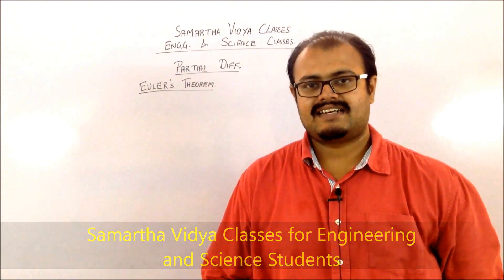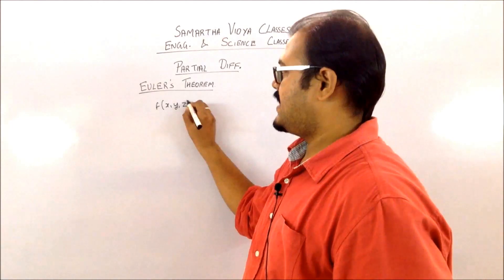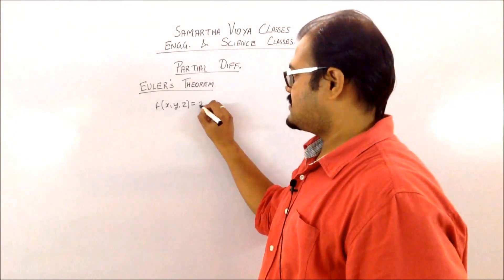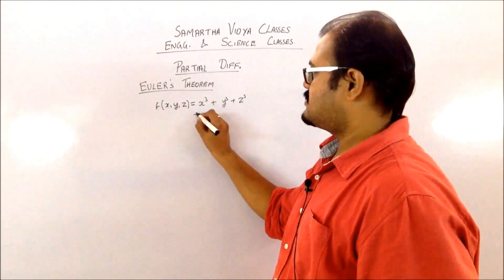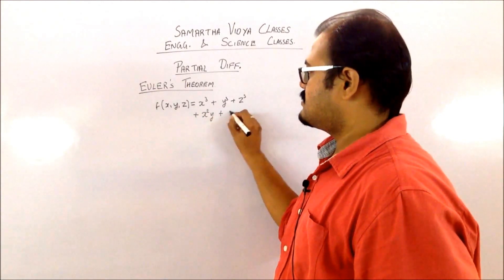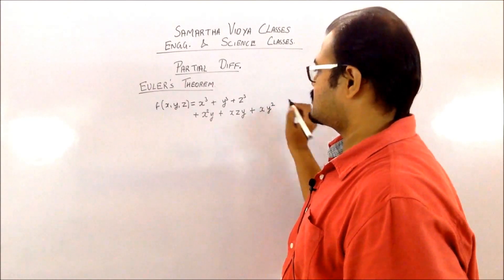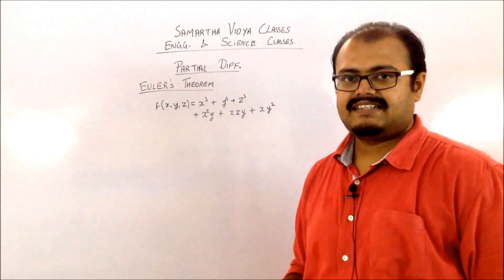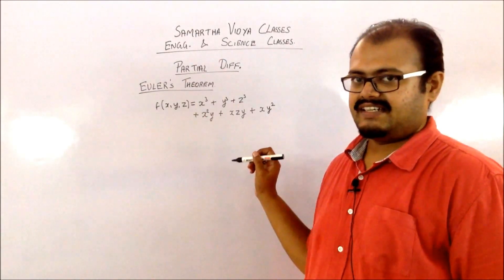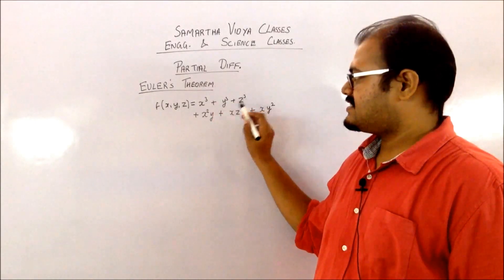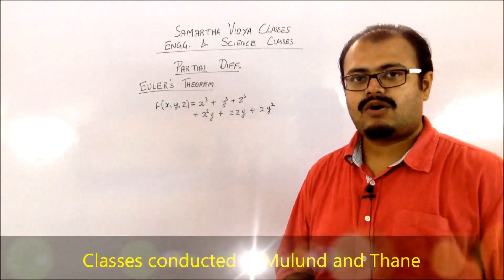To get a clear idea, let us consider an example. Consider a function comprising of x, y, and z with terms like x cube plus y cube plus z cube plus x square y plus x·y·z plus x·y square. In each and every term, the addition of the degrees of the variables is the same. It is 3, 3, then 2 plus 1, then 1 plus 1 plus 1, and 1 plus 2, which all come down to 3.